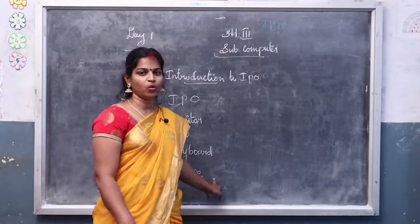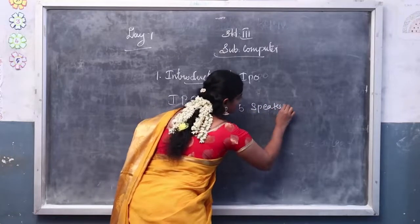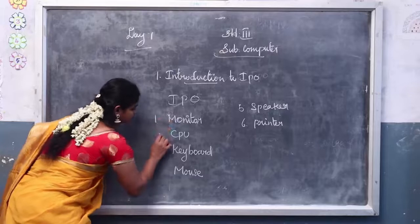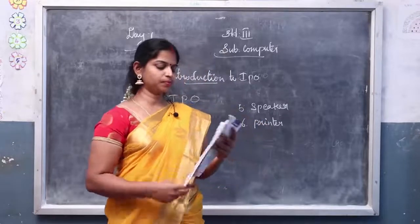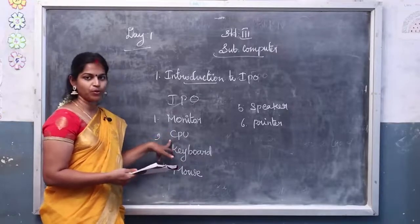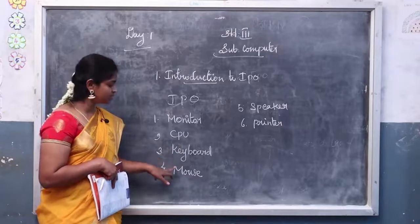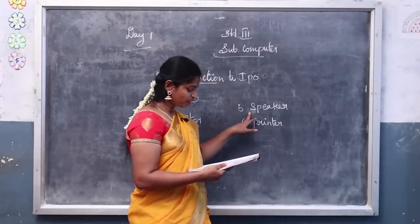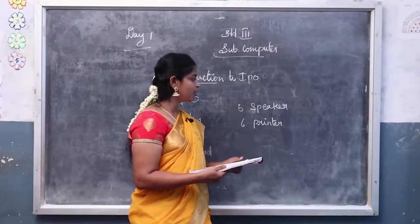Apart from these, many accessories are there. The fifth one is speaker, and there is also a printer. Monitor shows the work and result. CPU is the processing device — CPU means central processing unit. Keyboard is an input device. Mouse is also an input device. Speaker lets you hear the sounds you play on the computer. Printer prints the information onto a sheet.